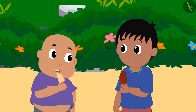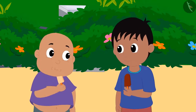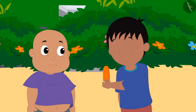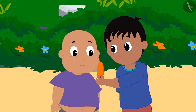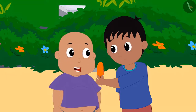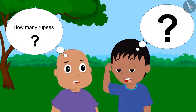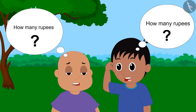Raju and Bablu first ate one choco bar ice cream and one vanilla ice cream. Then both of them together shared one orange candy. Now both of them are thinking how much they have to pay for the ice cream to Babban.